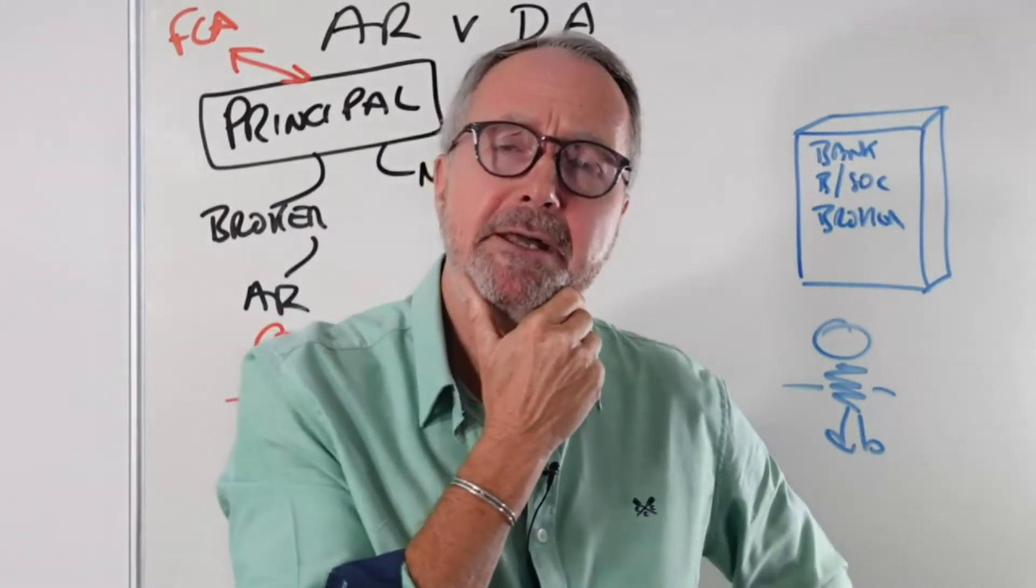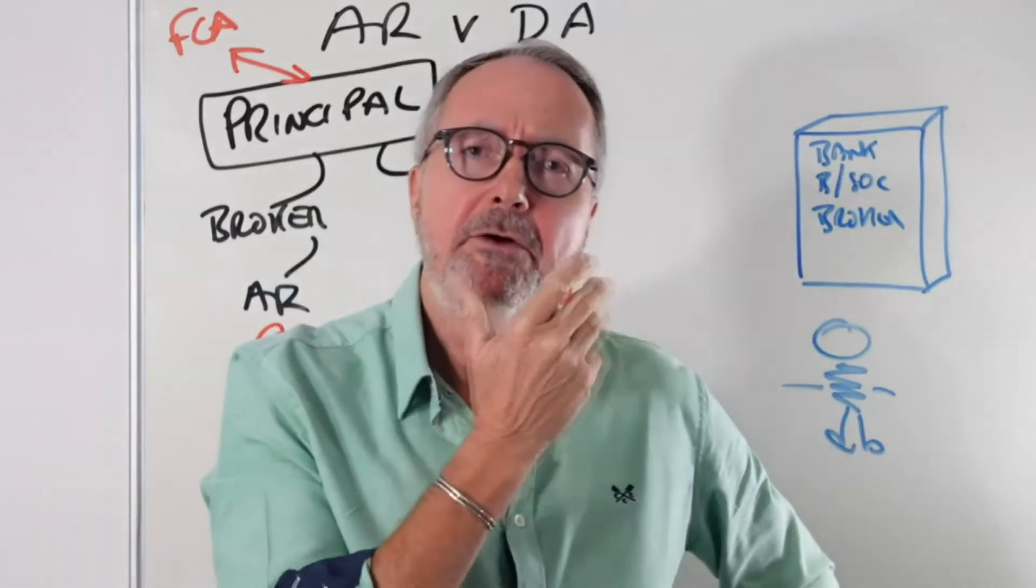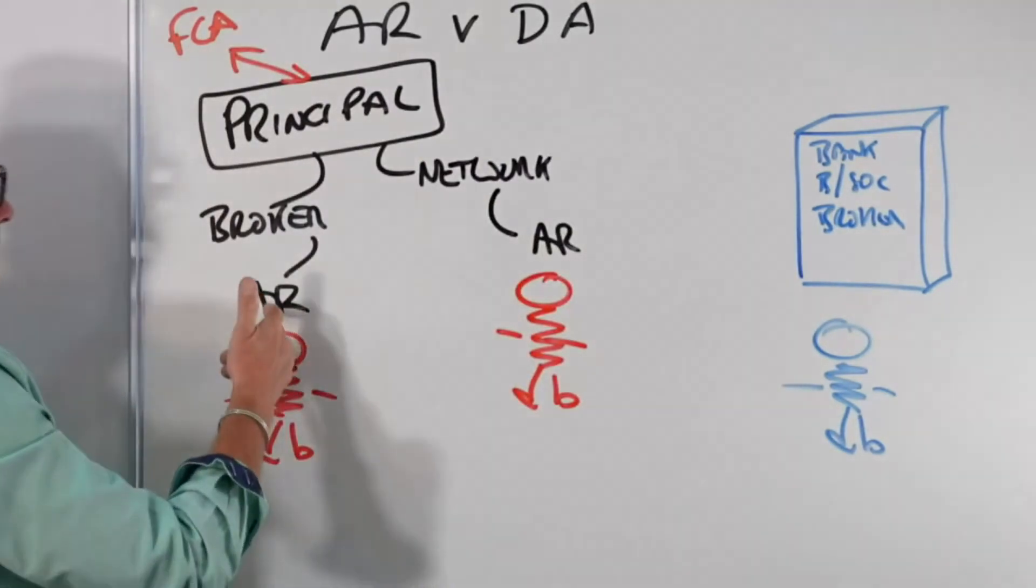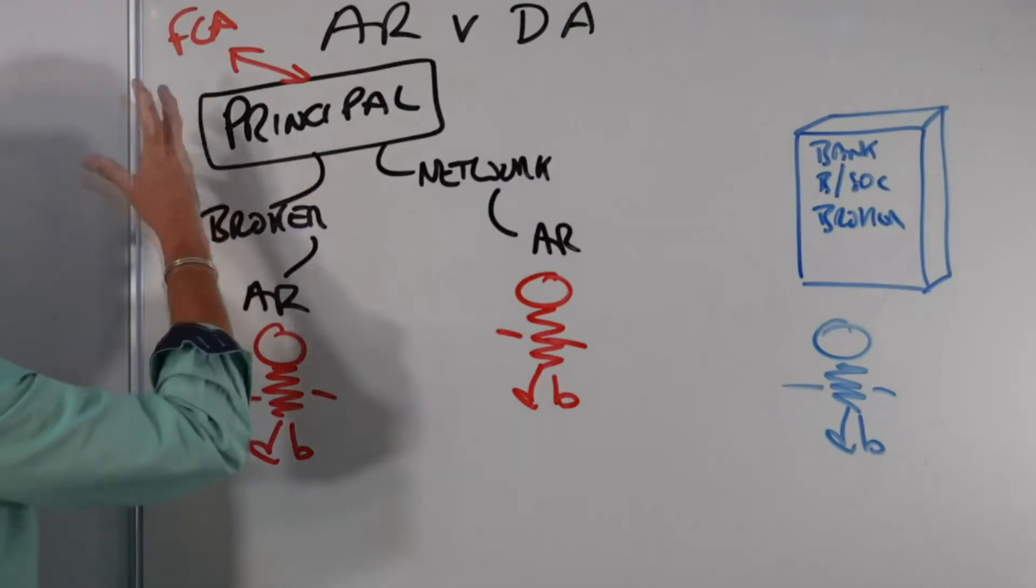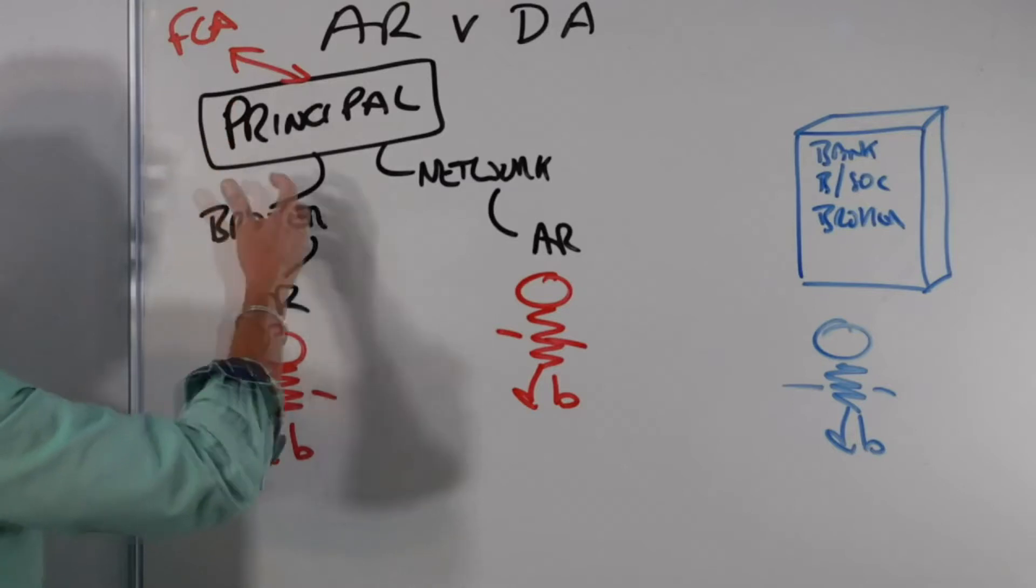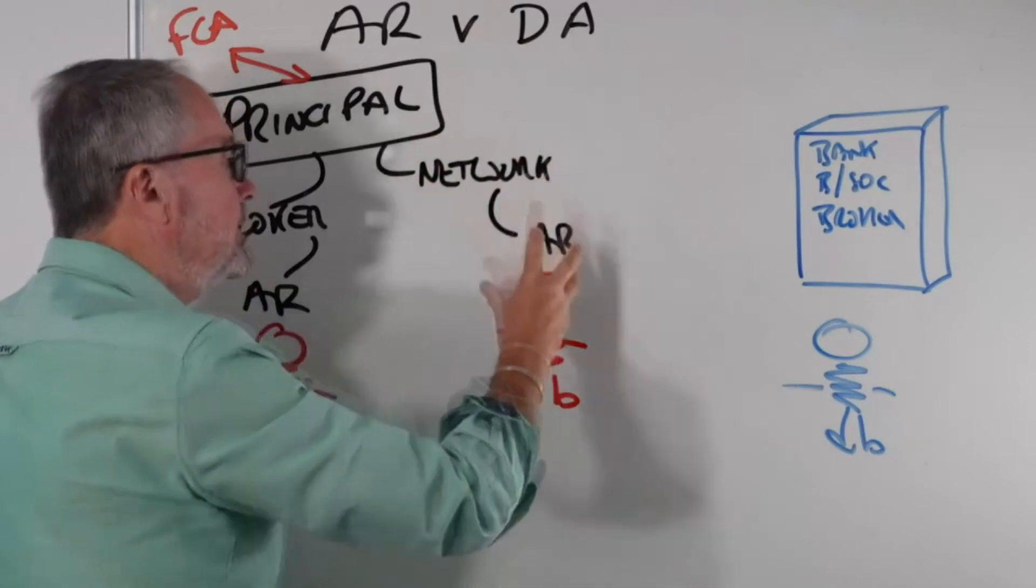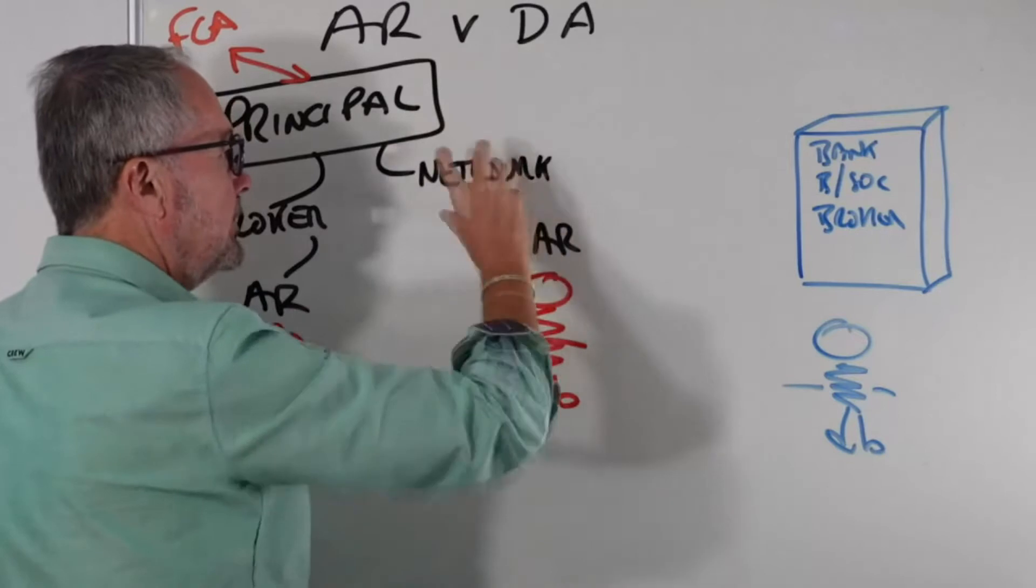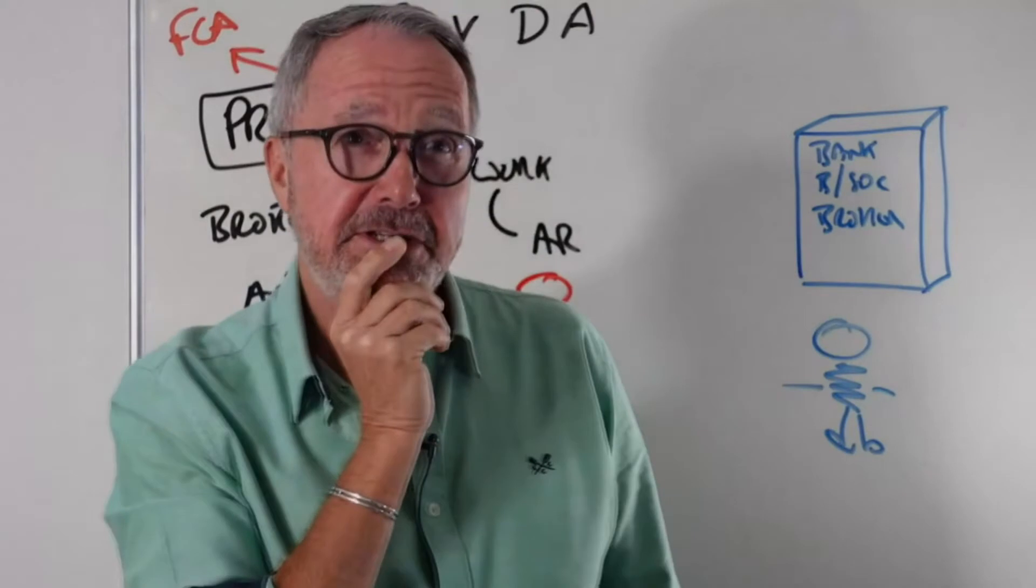They're also responsible for lender and product provider liaison. So you might think you're going to be able to use every single lender going, but as an AR, you are completely reliant upon the broker having liaisons with lenders, liaisons with insurance companies. They have connections with insurance companies. The network has connections as well. So only their insurance companies, only their lenders can you use. If you're part of a club, the Morgan General Mortgage Club, only can you join that if it's part of the network. So they're responsible for giving you lenders as well, which is key, isn't it?